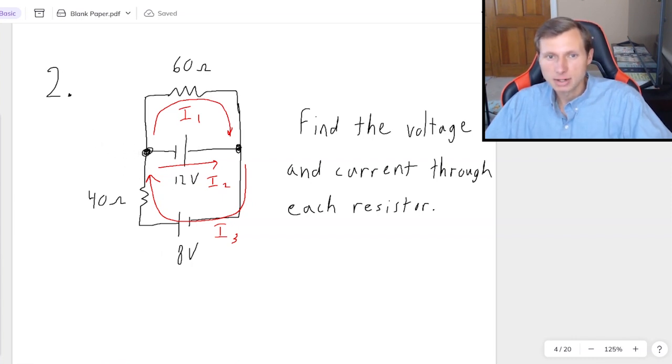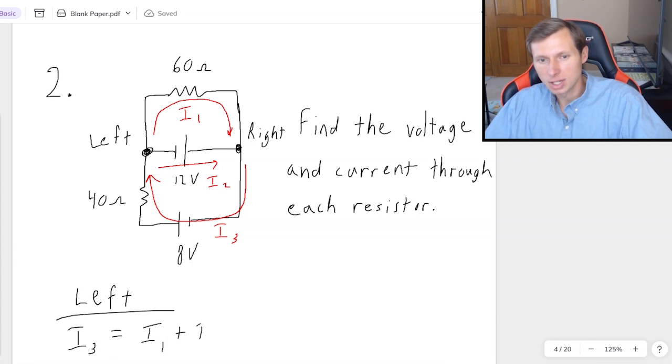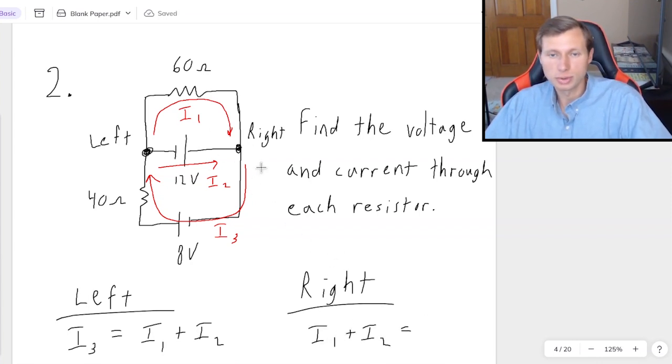So earlier I mentioned it doesn't matter if we choose this left junction or the right junction. And now let me prove it. If I do it for the left junction, I'm saying the current pointing in, which is I3, is equal to the currents pointing out, which is I1 plus I2. If I end up choosing the right junction, the currents going in are I1 plus I2. And those are equal to the current going out, which is I3. So as you can see, it's the same equation. It's going to be redundant. So I don't care which one I use. I'll just keep the left one. We just need one of those KCL equations. And again, the reason why they came out to the same answer is because these two junctions are basically connected and touching each other.